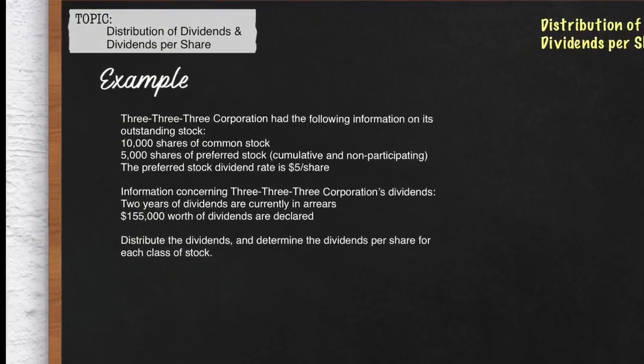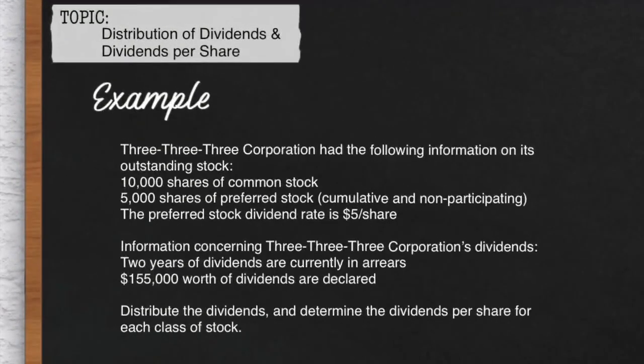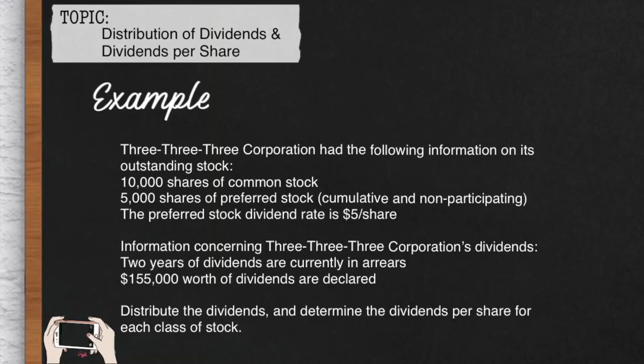Let's go over distribution of dividends and dividends per share. Here's our example. 333 Corporation had the following information on its outstanding stock. We have 10,000 shares of common stock. We also have 5,000 shares of preferred stock that are considered cumulative and non-participating. The preferred stock dividend rate is $5 per share.